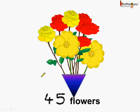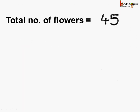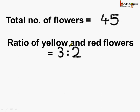Now let us solve another problem. There were 45 flowers with the florist, and in this bouquet the ratio of red flowers to yellow flowers was 3 is to 2. We need to find how many red flowers there were and how many yellow flowers there were. The total number of flowers is equal to 45, and the ratio of red to yellow flowers is equal to 3 is to 2.